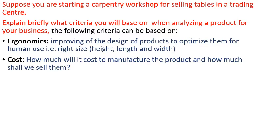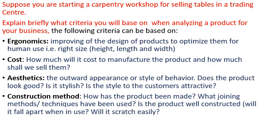Three: aesthetics. This refers to the outward appearance or the style of the product. Does the product look good? Is it stylish? Is the style appealing to the consumer? That is to do with aesthetics. The outward appearance of the tables also matters a lot, and at the same time, look at the style.